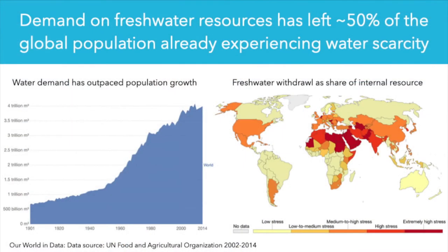We have to think about how we are impacting our ambient water and what that means for our ability to access clean drinking water. The demand on global freshwater resources has never been higher — about 50% of the global population is already experiencing water scarcity. Water demand has outpaced population growth, and freshwater withdrawal as a share of internal resources is very high in many countries. Countries shown in red on the map are high risk, taking more water than they have access to and more than they can replace.